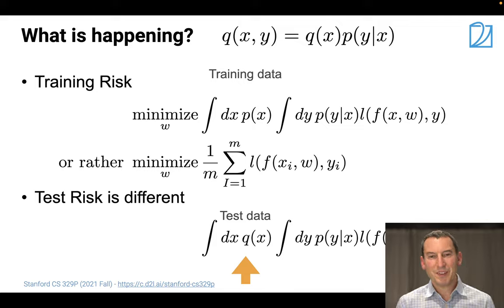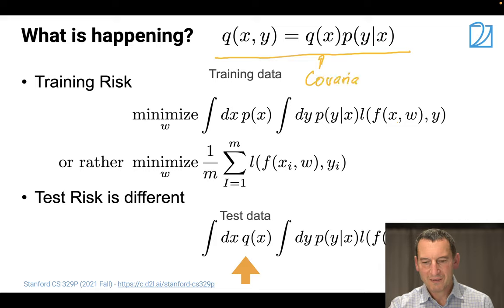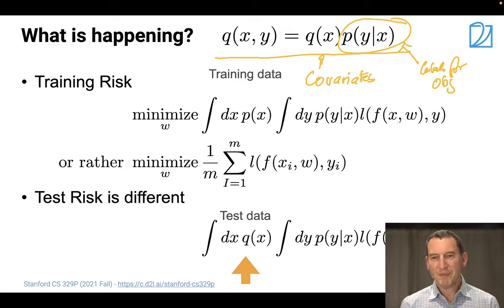So let's look at it in terms of math, because intuition is great. And intuition is great in order for you to help you detect what's going on. But it's not so good if you then actually want to fix it specifically. So the salient assumption in covariate shift is that q(x,y) is given by q(x) times p(y|x). So why is that the case? So these are the covariates. And this is the actual labels for a given object.